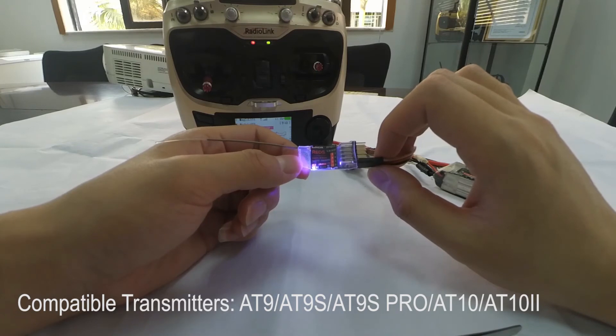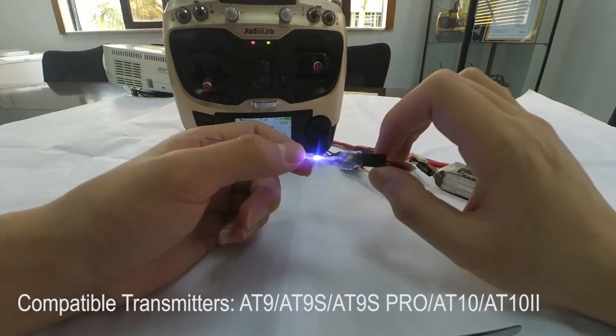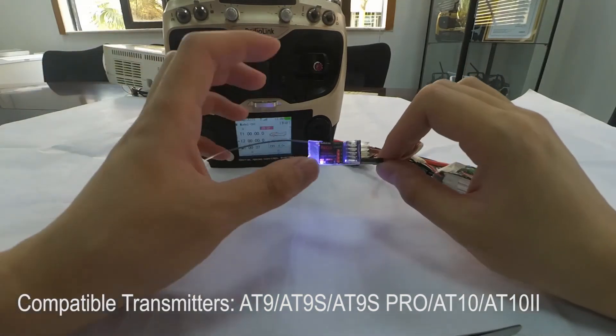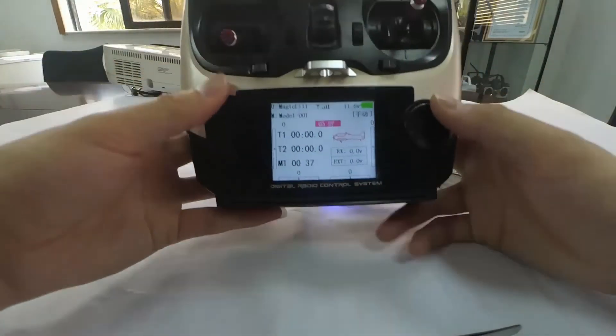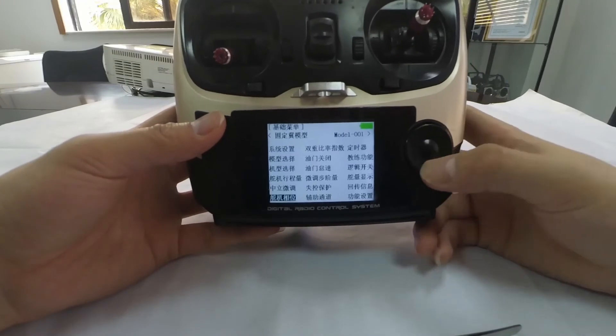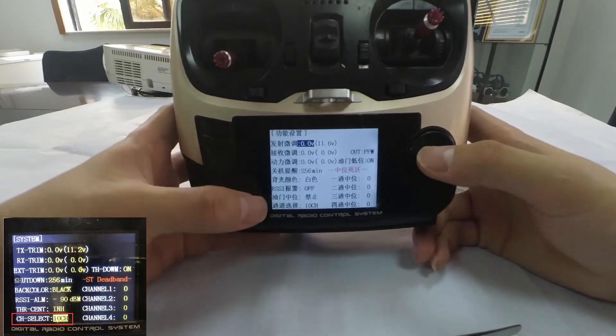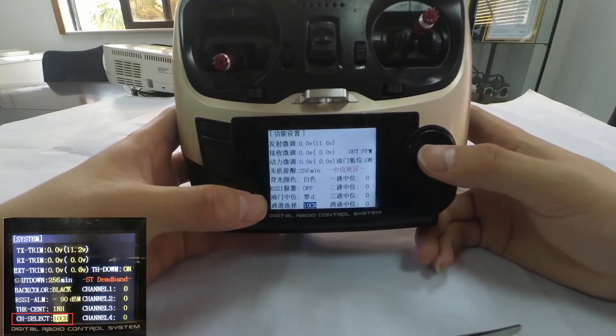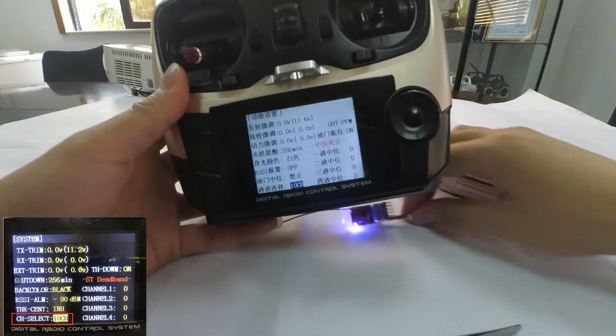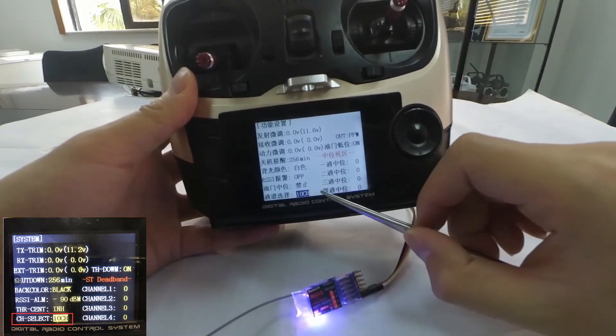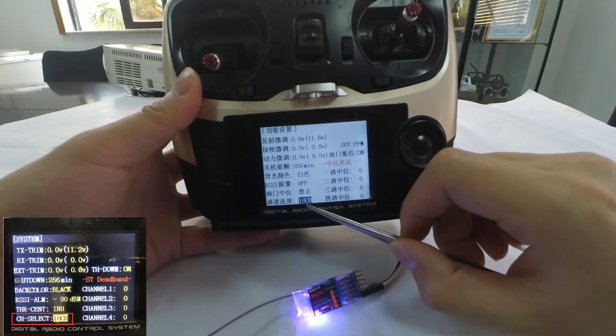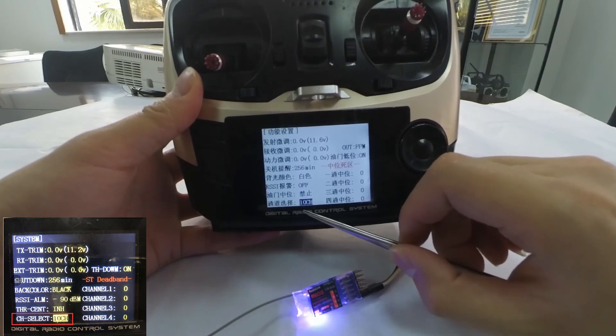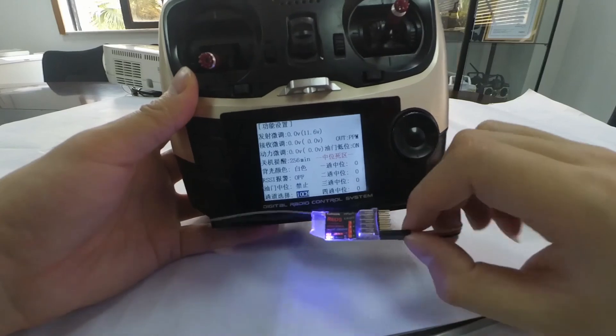This receiver is compatible with RadioLink transmitter 89S, 89S Pro, and 8010. When using this receiver, if the firmware of your transmitter is the latest, we also need to enter the system manual to check the channel quantity at channel select and change it to 10 channels, because it is a 10-channel receiver. This step is very important and cannot be skipped.